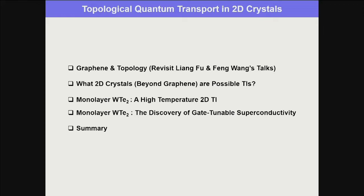I'll give an example — that's the experimental study which Liang advertised. I'm going to talk about monolayer tungsten ditelluride, which we picked a few years ago, and we find that it's a 2D topological insulator at high temperature even. Also, we made a discovery in this same material, which is superconductivity.